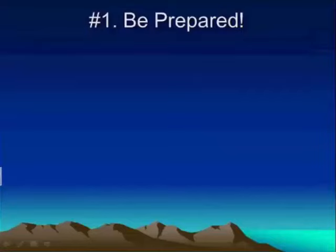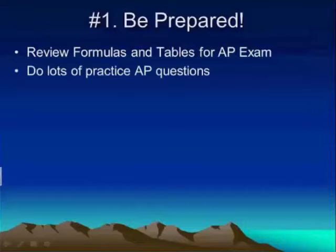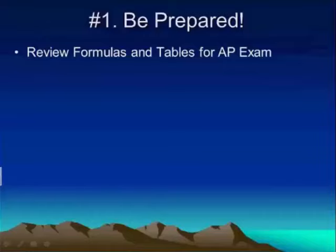Number one: be prepared. One thing you could do is review the formula sheet and the tables that come on the AP exam. Students often use the tables, but many times don't use the formula sheet. It's good to know what's on it so that if there's an issue, you can look at it, and it may help prompt and trigger something in your brain. Know what's on the formula sheet, know what each formula is referred to, and know how to use the tables. The formulas and tables are provided on both sections of the exam — the free response and the multiple choice.